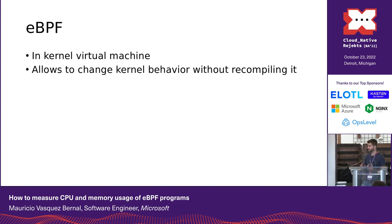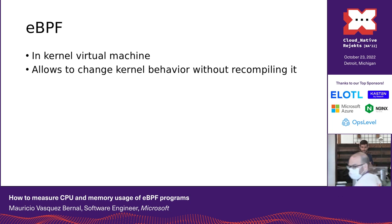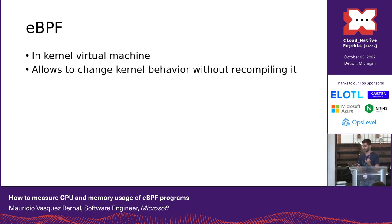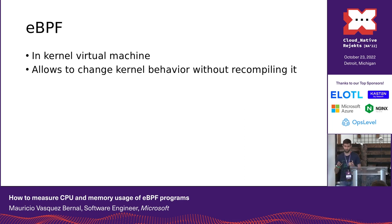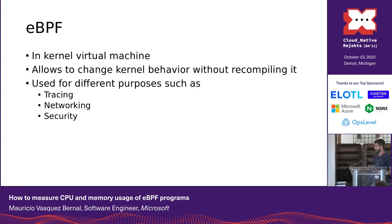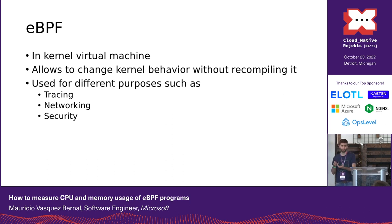Before eBPF, when we wanted to implement a change on the kernel, we had to send a patch to the Linux kernel mailing list, discuss that with the community, and maybe it was going to be accepted. After some years, that version of the Linux kernel would be available for our customers. From the time I got a requirement to have a new feature on the kernel to the time I have that version running on our customers, maybe there could be two or three years — the deployment cycle was very slow. With eBPF, we are able to make that much faster by injecting programs without having to recompile or change the kernel.